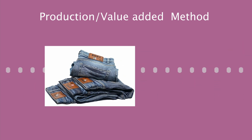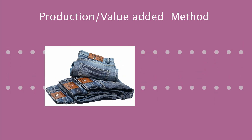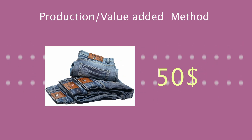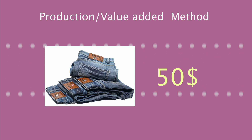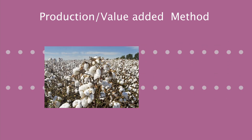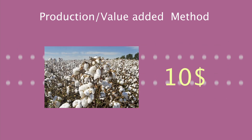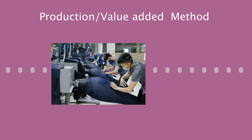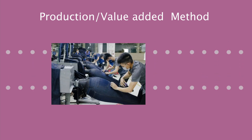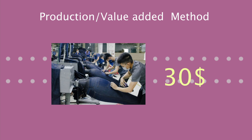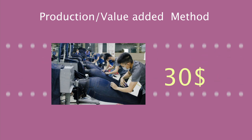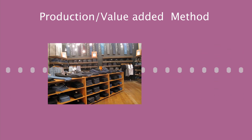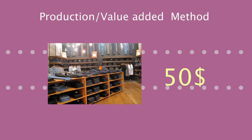For example, let's say the cost of producing one pair of jeans is $50. To produce this pair, we need cotton as raw material, say $10. This would be sent to the factory to produce the jeans at a total of $30. These jeans would then be sold at the store for a total of $50.